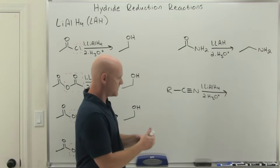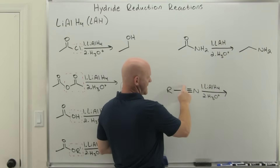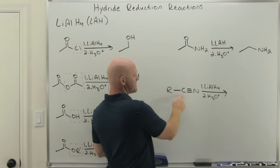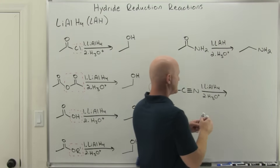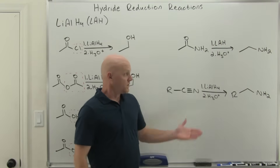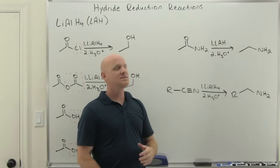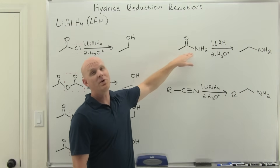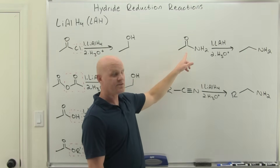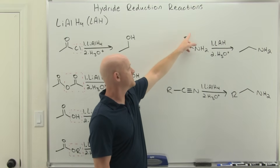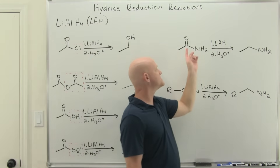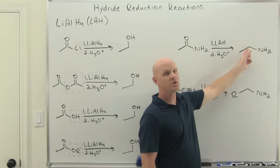Similarly with the nitrile: the equivalent of the hydride ion attacks, pushing the electrons out to the nitrogen. A second hydride then attaches, and the acid workup step protonates the nitrogen, again yielding the corresponding amine. One thing to note: don't confuse reduction of an amide with the Hofmann rearrangement, covered in Chapter 22. The Hofmann rearrangement also turns an amide into an amine, but it's one carbon shorter — you lose the entire carbonyl carbon. With hydride reduction, you're just reducing the carbonyl to an alkyl group with no loss of carbon.